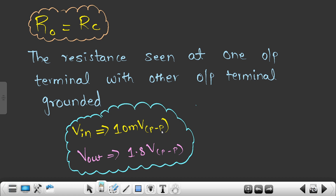That means during unbalanced output we are getting exactly half the signal. Why exactly are we getting the signal of around 0.9 volts peak to peak compared to the balanced output?